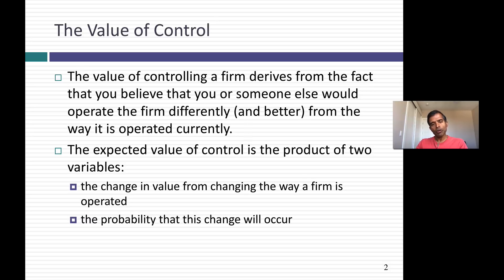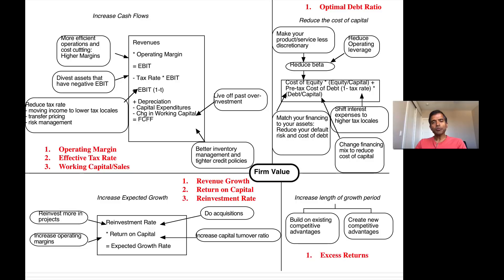Of course, in order to be able to do this, you have to take control of the company. So you have to multiply this value of control by the likelihood — the probability — that you can change the existing management of the company. So let's put this into practice.